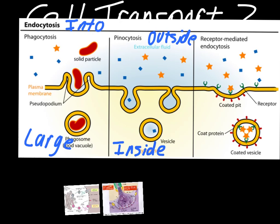The last one is the most technical: receptor-mediated endocytosis. Receptor-mediated endocytosis has little protein receptors on the outside of the membrane. What these do is match up with a certain particle the cell is looking for. You can see the star-shaped ones fit in here, but the box-shaped ones don't. Once the three receptors fill up, this area becomes encased with cell membrane, and we end up with a vesicle containing just those three star-shaped particles — maybe a sugar or something like that inside the cell.